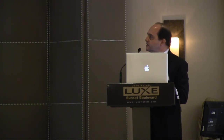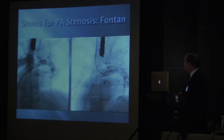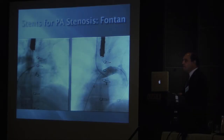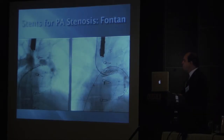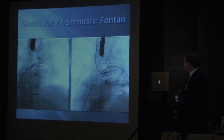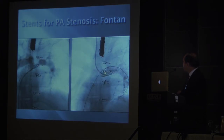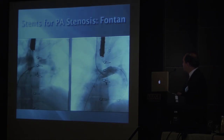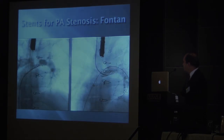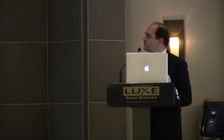This is a patient with a Fontan who has a narrowing. It's not quite as dramatic as the previous picture, but in a Fontan, even small narrowings can make major differences in terms of hemodynamics. This is the same left pulmonary artery after stent placement, and these have been very effective for that.